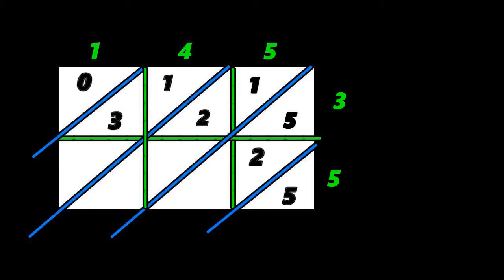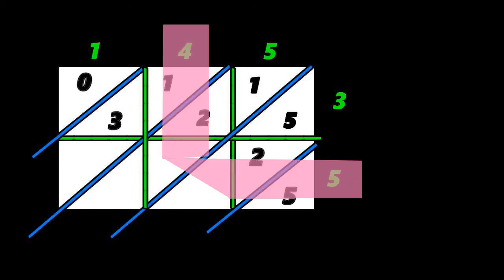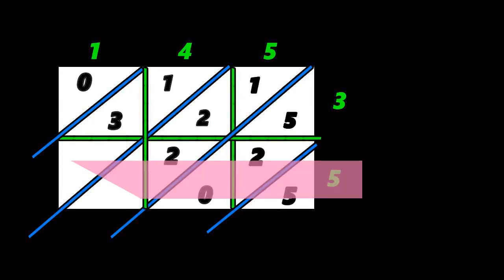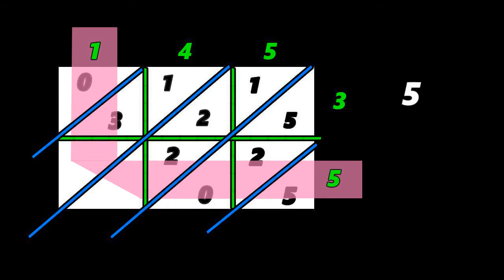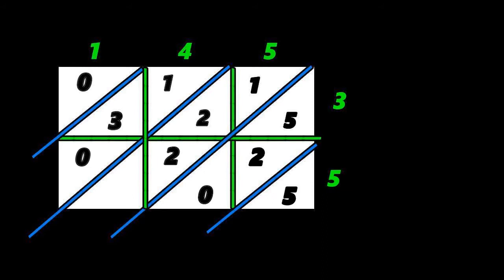Next, five times four — twenty. Very good. So, write two and then zero. Next, five times one — five. Write zero and then five.